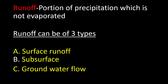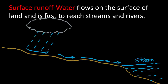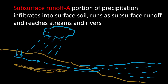The next component is runoff, which is the portion of precipitation that is not evaporated and may finally join streams. Runoff can be of three types: surface, subsurface, or groundwater flow. In surface runoff, water flows directly over land and reaches streams. In subsurface runoff, water initially infiltrates, travels horizontally, and then joins the surface streams.